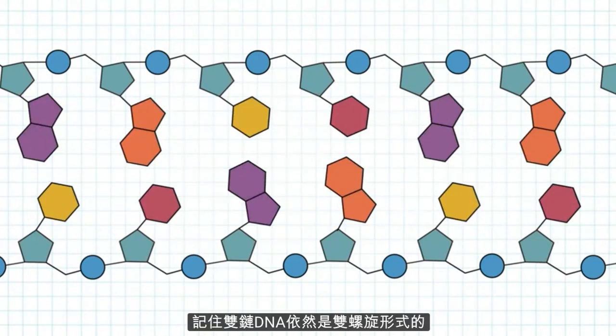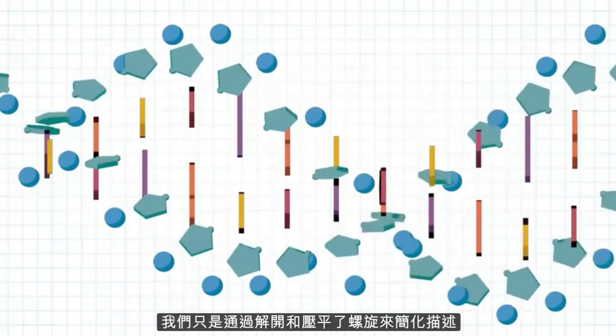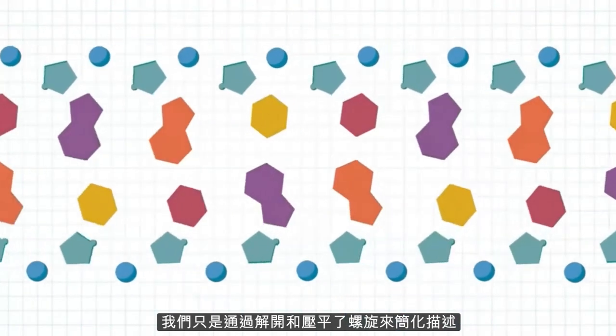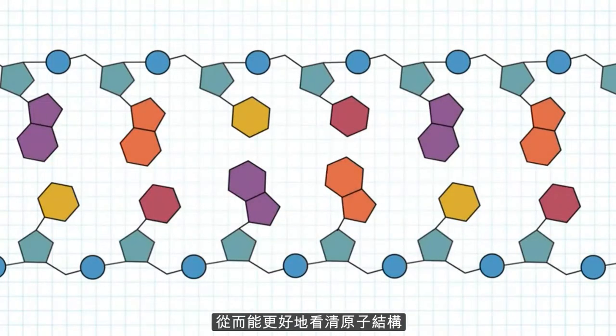Keep in mind that this double-stranded DNA is still a double helix, and we have simplified the representation by flattening and unwinding the helix here to better see the atomic structure.